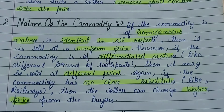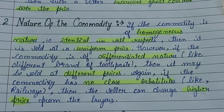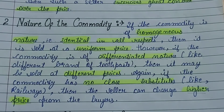Differentiated product में price पर थोड़ा control हो सकता है। लेकिन अगर commodity का कोई close substitute नहीं है — like railways — तो वो ज्यादा price भी charge कर सकता है। So commodity के nature पर बहुत depend करता है: homogeneous product है तो uniform price, differentiated product है तो different price, और अगर कोई close substitute ही नहीं है तो higher prices भी charge की जा सकती हैं।